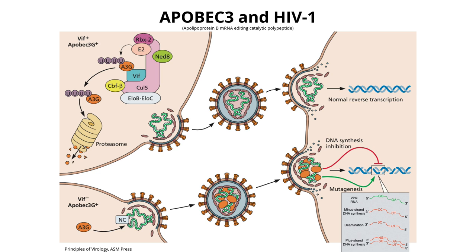You may ask why APOBEC isn't preventing the AIDS epidemic. The countermeasure is a viral protein called VIF, encoded by the HIV genome. In infected cells, VIF becomes part of a large complex that adds ubiquitin moieties to APOBEC-3, targeting it for degradation. The ubiquitinated APOBEC goes to the proteasome—essentially a garbage disposal—and is chopped up. So VIF's ubiquitination of APOBEC targets it for destruction, which is why HIV evades APOBEC and can replicate freely.